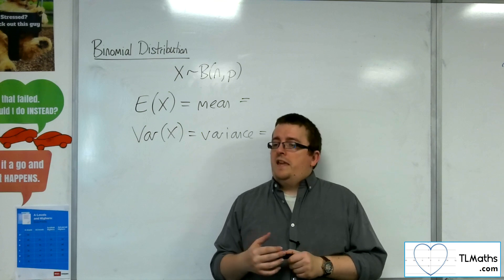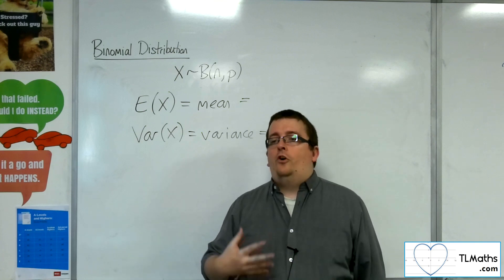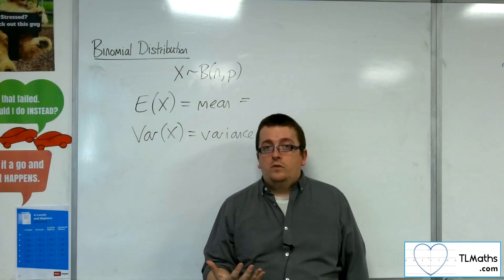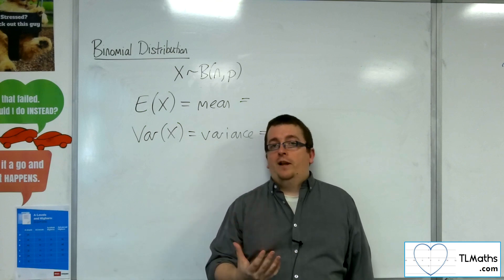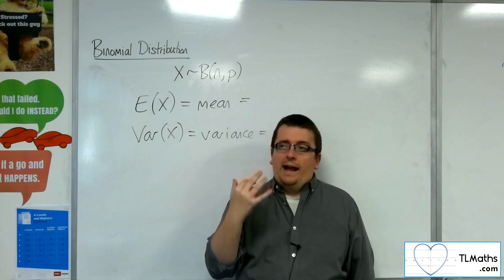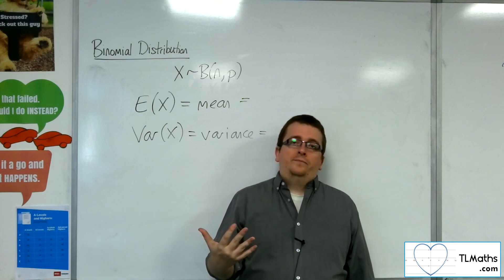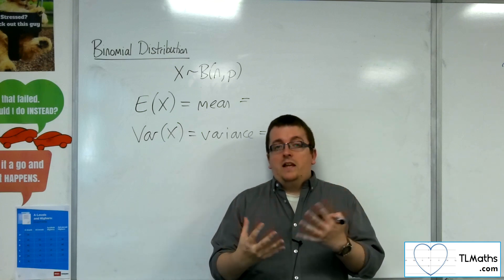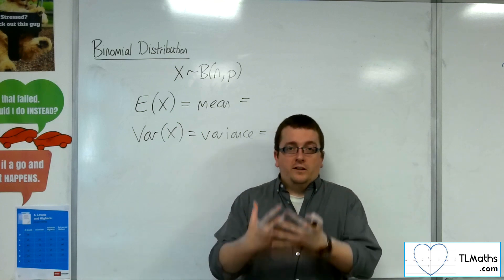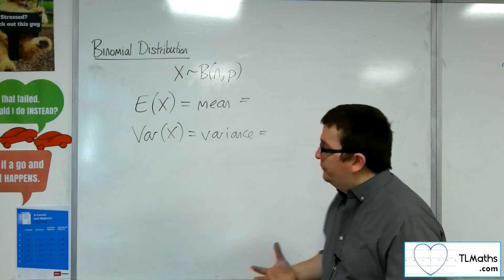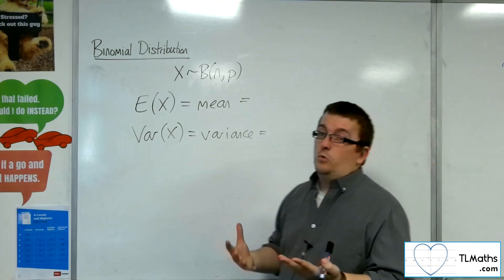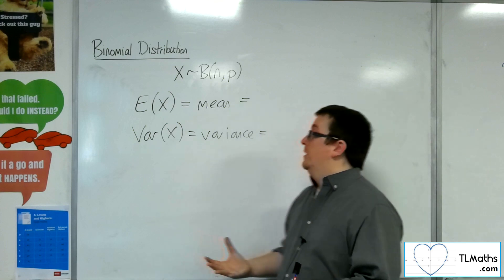However, the mean and variance of the binomial distribution is expected knowledge for full A level. We're unable to derive them here, so really what I'm going to be saying is just stating some facts rather than deriving them, showing you where they came from, unfortunately.